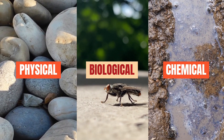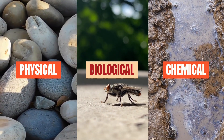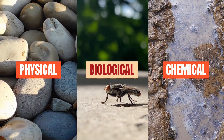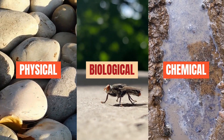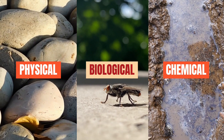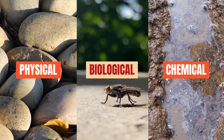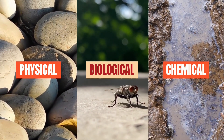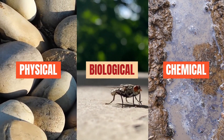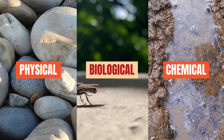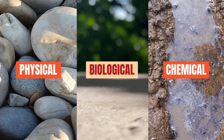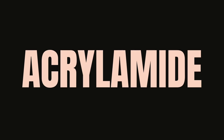Chemical contaminants include any chemical substances that contaminate the food. They pose a potential risk to food safety depending on the concentration present and their respective toxicities. In this video, we would like to share with you about one of the chemical contaminants: acrylamide.